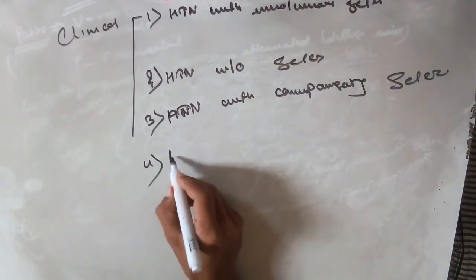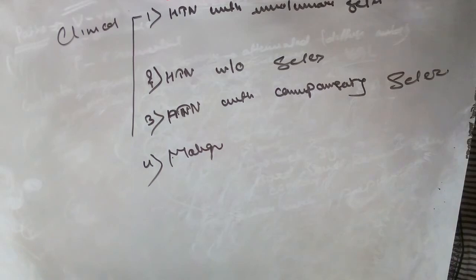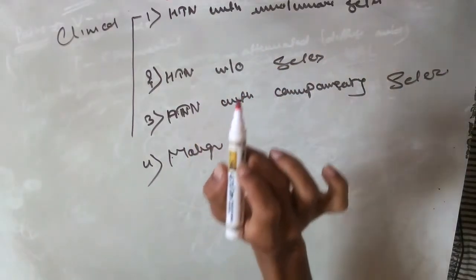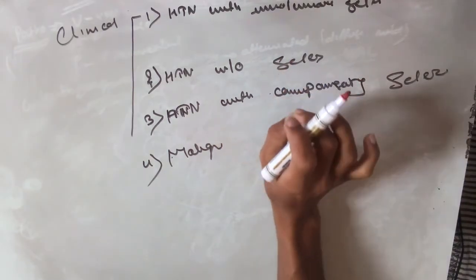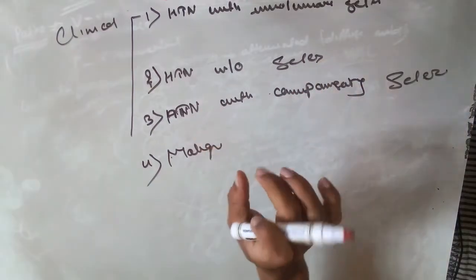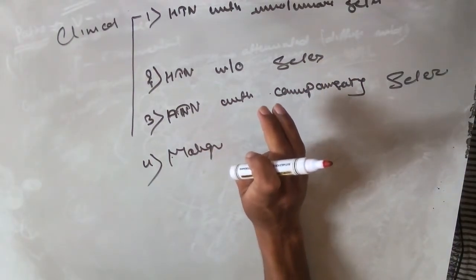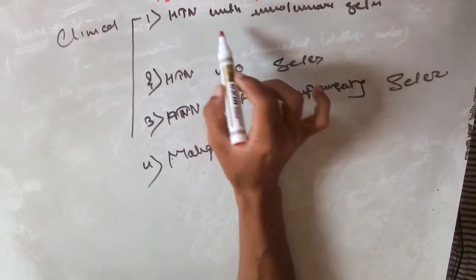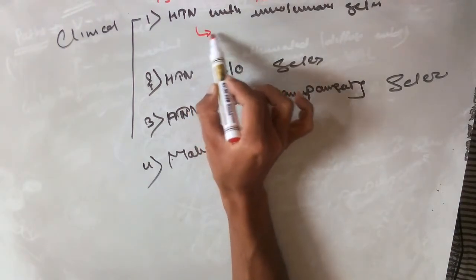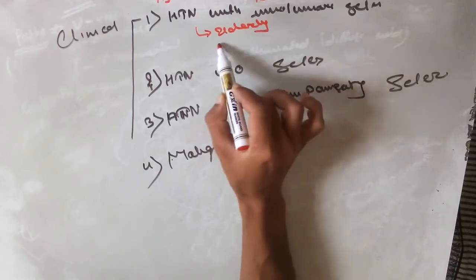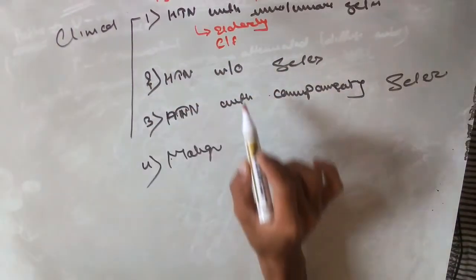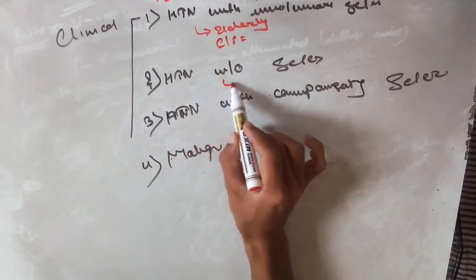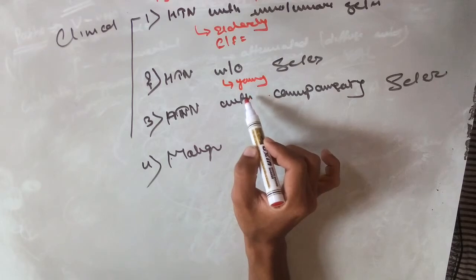Clinical features across these types include edema, hemorrhage, hard and soft exudates, and AV crossing changes such as nipping of arterioles and perpendicular placement of the vein, known as Bonnet sign. Patients with involutionary sclerosis are usually elderly, while patients without sclerosis are typically young patients exposed to high blood pressure.